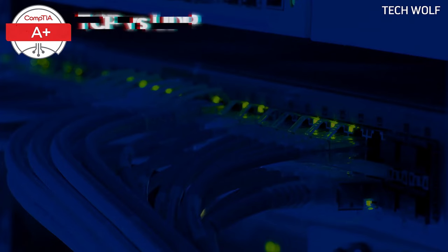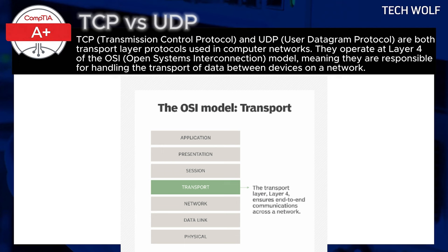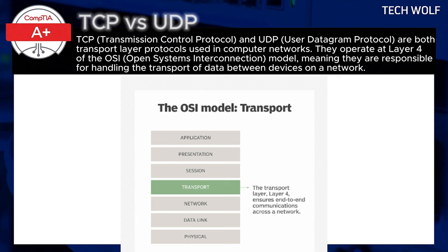TCP, Transmission Control Protocol, and UDP, User Datagram Protocol, are both transport layer protocols used in computer networks. They operate at Layer 4 of the OSI, Open Systems Interconnection, model, meaning they are responsible for handling the transport of data between devices on a network. Neither protocol is tied to a specific port by default, but both use ports to help identify where data should go on the receiving device. Applications like web browsers or streaming services will specify a port number for data to be sent or received.